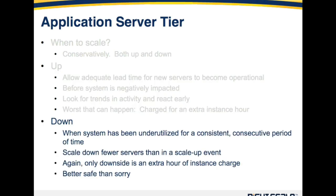In the down direction, you want to scale down when the system has been underutilized for a consistent, consecutive period of time. You don't want to react on small spikes or downward activity — look for trends and only remove infrastructure when you're sure it's no longer needed. We generally recommend scaling down fewer servers than you do in a scale-up event. Some customers in the social gaming space may scale up by 20, 30, or 50 servers at a time, and when it's time to scale down, we recommend pulling away fewer servers than you scaled up. The only downside is an extra hour of instance charges, and in the next scale-down event those servers will be pulled down.